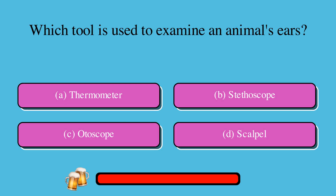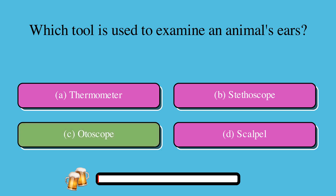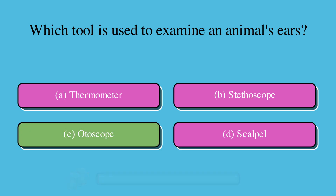Which tool is used to examine an animal's ears? A. Thermometer, B. Stethoscope, C. Otoscope, or D. Scalpel. The correct answer is C. Otoscope.